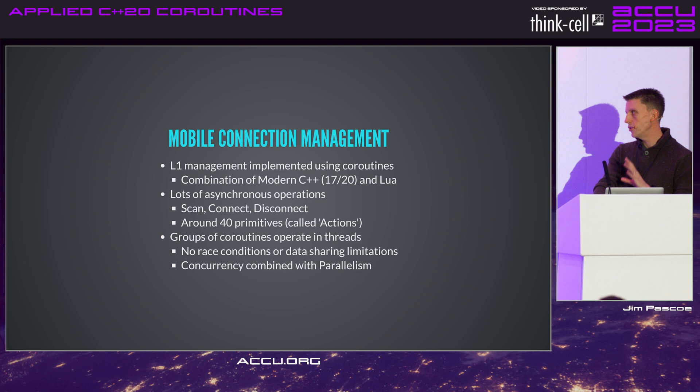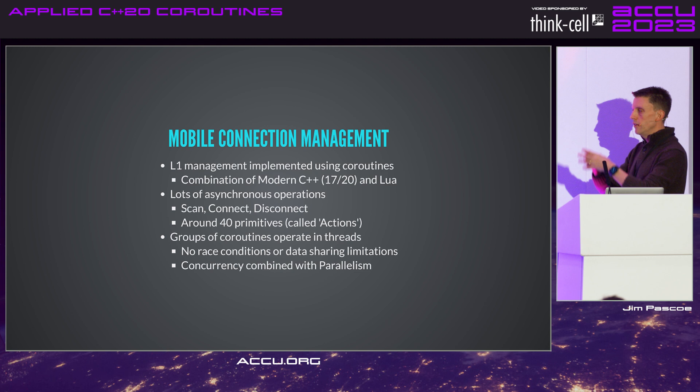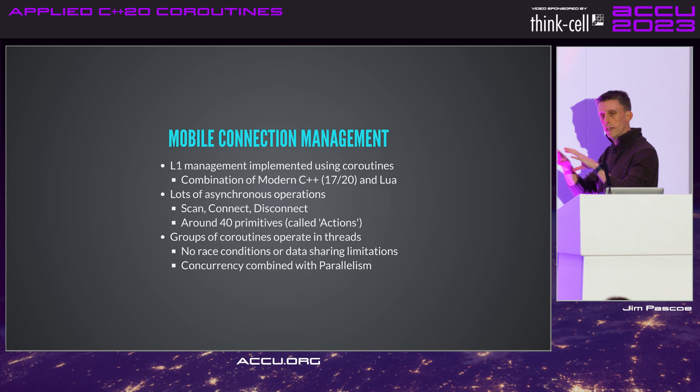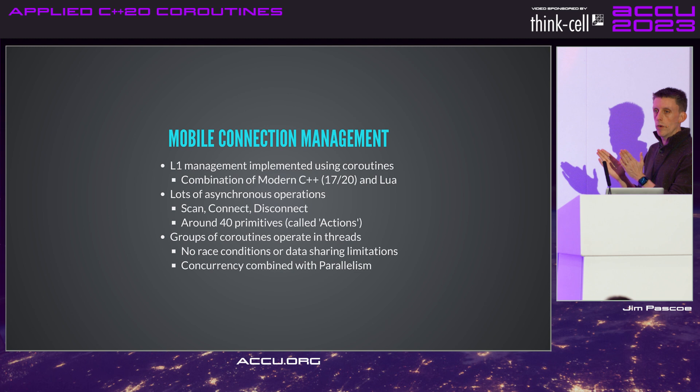We've got groups of coroutines operating in threads — no race conditions or data sharing limitations. Going back to our model of concurrency versus parallelism: this gives you concurrency from coroutines within threads, while those threads run in parallel with each other. When you can get that working, you really are getting to a point where there are very few opportunities for wasted work.